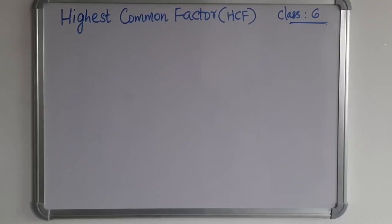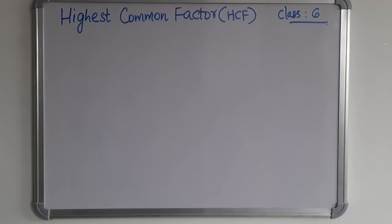Hi everyone. Today's topic is Highest Common Factor, HCF. Last class you studied about prime factorization. The same prime factorization here also you need to use to find the HCF. HCF means the highest common factor of two or more given numbers is the highest of their common factors. So how to find out the HCF of two or more numbers.